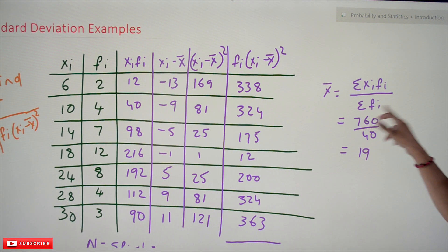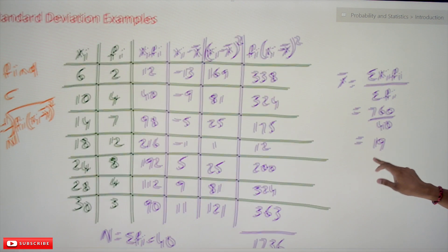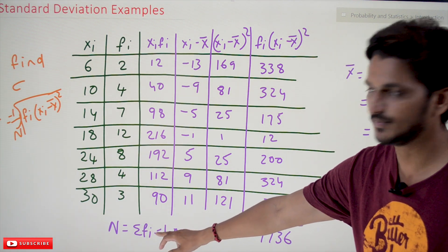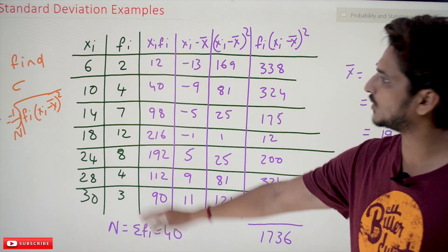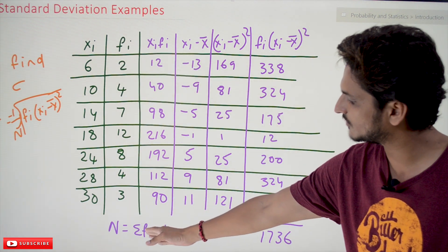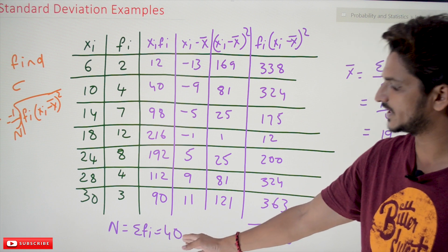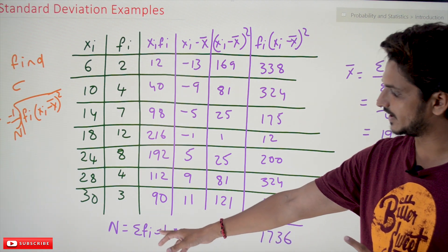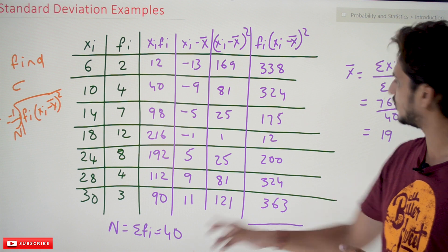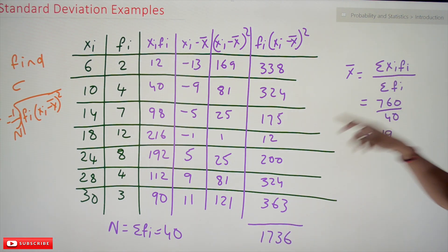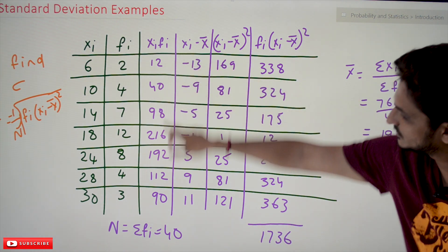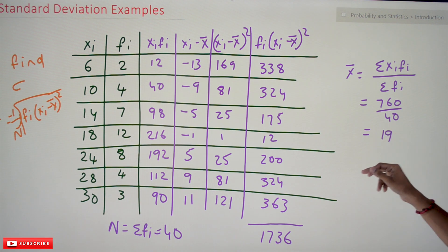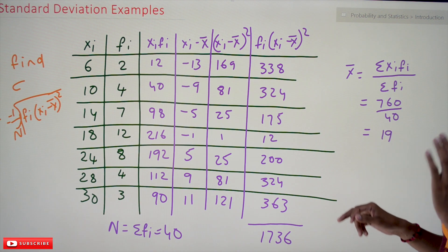To find the mean, x̄ = Σ(fi·xi) / Σfi. Here N = Σfi is the total number of data points, which equals 40. Σ(fi·xi), adding all those product values, gives 760. So x̄ = 760 / 40 = 19. The mean value is 19.